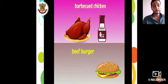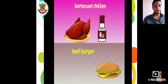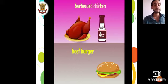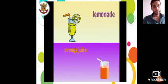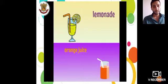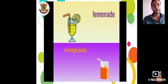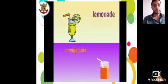Beef Burger — a slice of meat, flat. Beef Burger. Lemonade — lemon juice. Lemonade. Orange Juice. Orange Juice. Orange juice is juice made from an orange. It's orange juice.